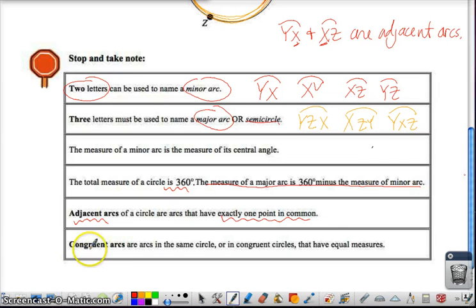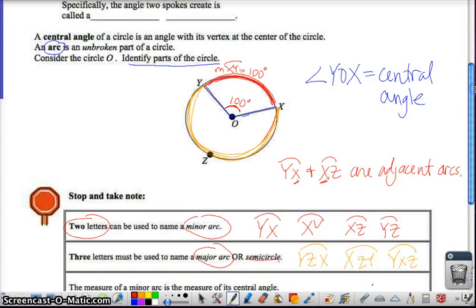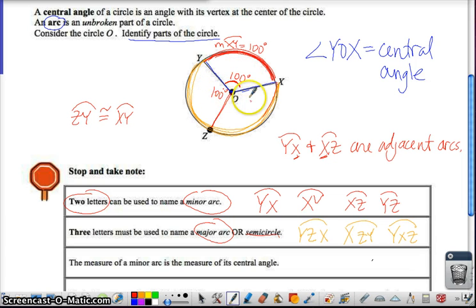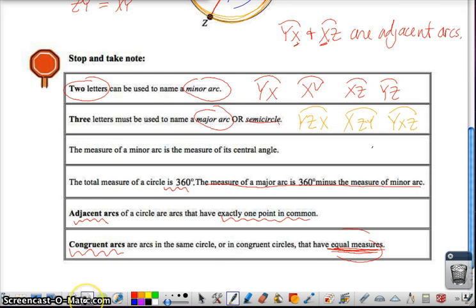Now, congruent arcs are arcs in the same circle or in congruent circles that have equal measures. So an arc is congruent to another arc if they have the same measure. So going back up here, if I name this 100 degrees, and I put another one over here, and I said, oh, this is also 100 degrees, then suddenly we know that ZY is an arc that is congruent to XY. So it would be true that arc ZY is congruent to arc XY. If I identify this part right here. Now, if I said this was 100 degrees and this is 100 degrees, what does this last angle XOZ have to be? Think about it. Hopefully you're thinking in your brain, 160 degrees, because then all the way around we would have 360 degrees around that circle.